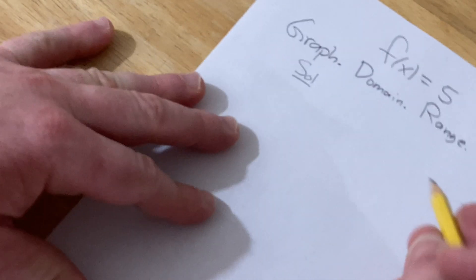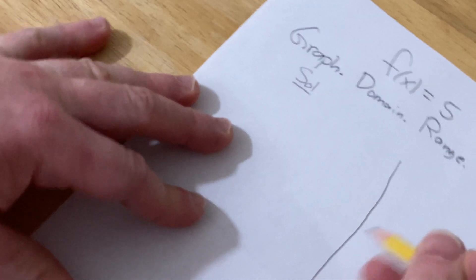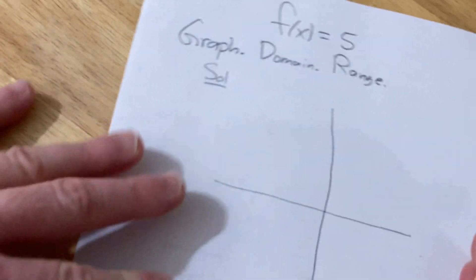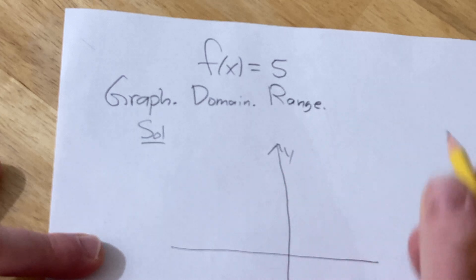So let me just draw it like this. Here's the y-axis, here's the x-axis. So there's y and there's x.